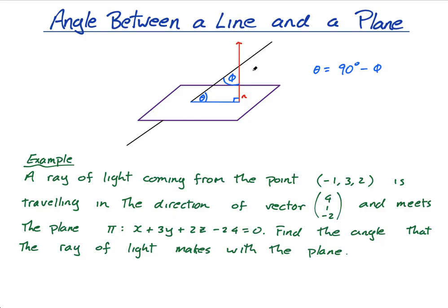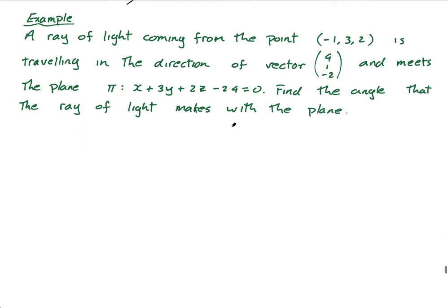If you end up getting phi and you end up getting an obtuse angle, make sure you're using the acute angle because of this diagram that I've just drawn. Okay, let's do this example.